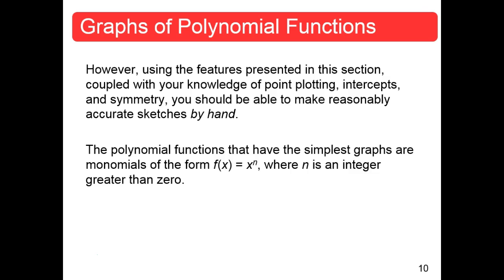However, using features presented in this section — point plotting, intercepts, symmetry — you should be able to make reasonably accurate sketches by hand. The polynomial functions with the simplest graphs are the monomial functions, or parent functions: f(x) equals x to the n, where n is a positive integer. If n is 1, that's the identity function f(x) equals x. If n is 2, that's your simplest parabola. We did those a lot last time. Anything greater is what we'll be looking at now.